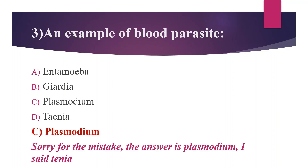Other blood parasites are Babesia, Leishmania, Trypanosoma, and Toxoplasma. Moving to other options: Entamoeba histolytica lives in the large intestine. Giardia is also seen in the intestine. Then Taenia lives in the small intestine.